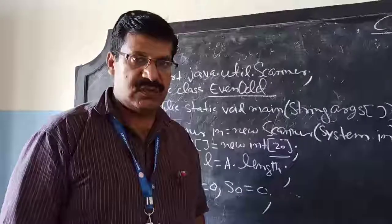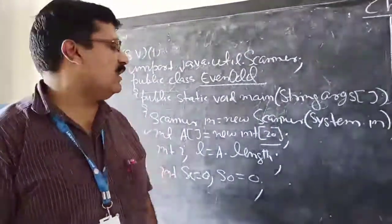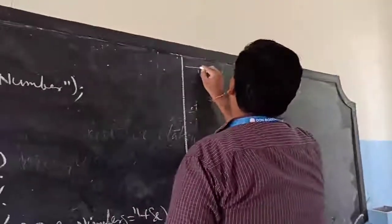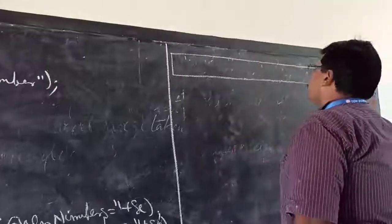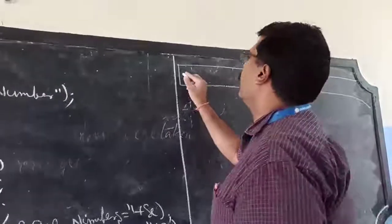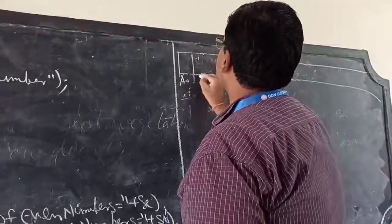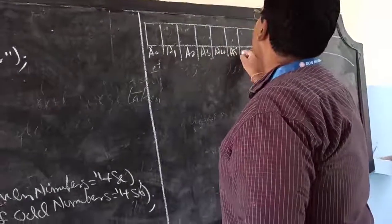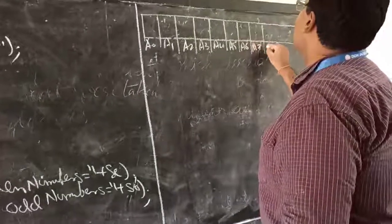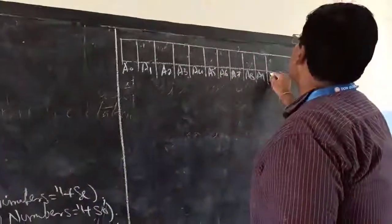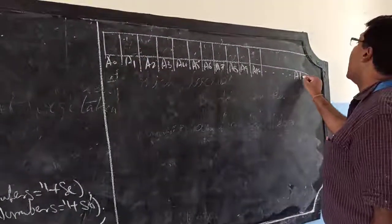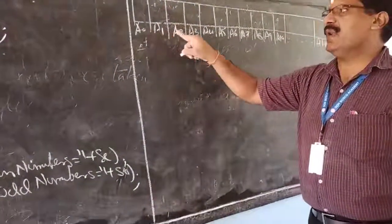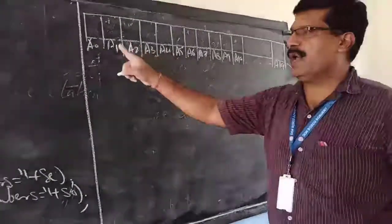The size of the array is 20 because the question asks us to accept 20 numbers. When this line executes, the computer will occupy a memory space and divide it into 20 parts. The first part will be a[0], then a[1], a[2], a[3], a[4], a[5], a[6], a[7], a[8], a[9] — and so on up to a[19]. So the indices run from 0 to 19, giving us 20 elements.